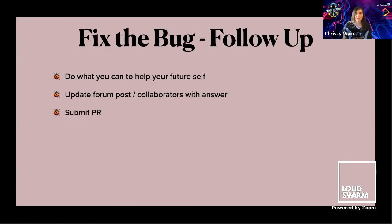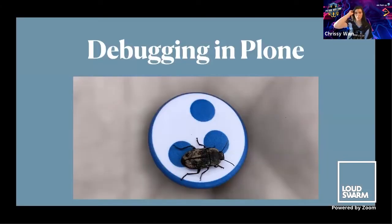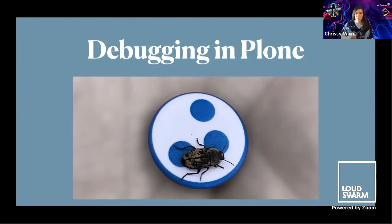Lastly, you can submit a pull request. If you found that it was a problem in some core code and put in a workaround in your custom code, also make sure to submit a pull request to the core code as well. Now I'll talk more specifically about debugging in Plone — these are specific places you can look inside of a Plone site that will help you figure out what is causing your bugs.